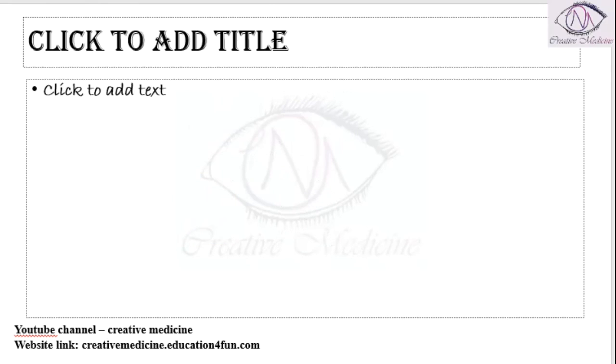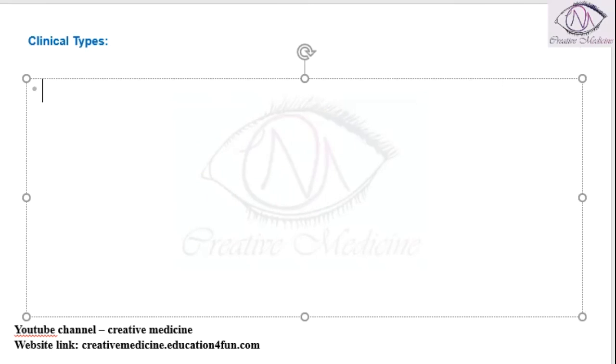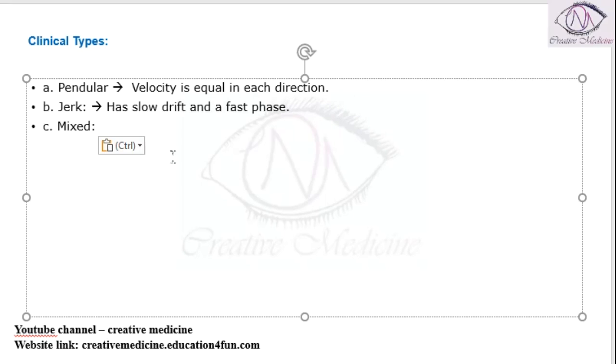The clinical types of nystagmus can be of three types. One, pendular nystagmus where the velocity is equal in each direction. Then we have jerk nystagmus which has a slow drift phase and a fast phase.